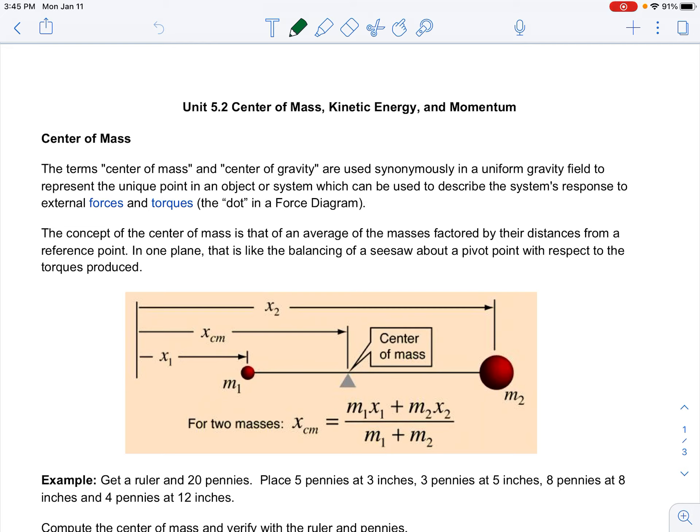First, center of mass. The term center of mass and center of gravity are used anonymously in a uniform gravity field to represent the unique point in an object or system, which can be used to describe the system's response to external forces and torques.